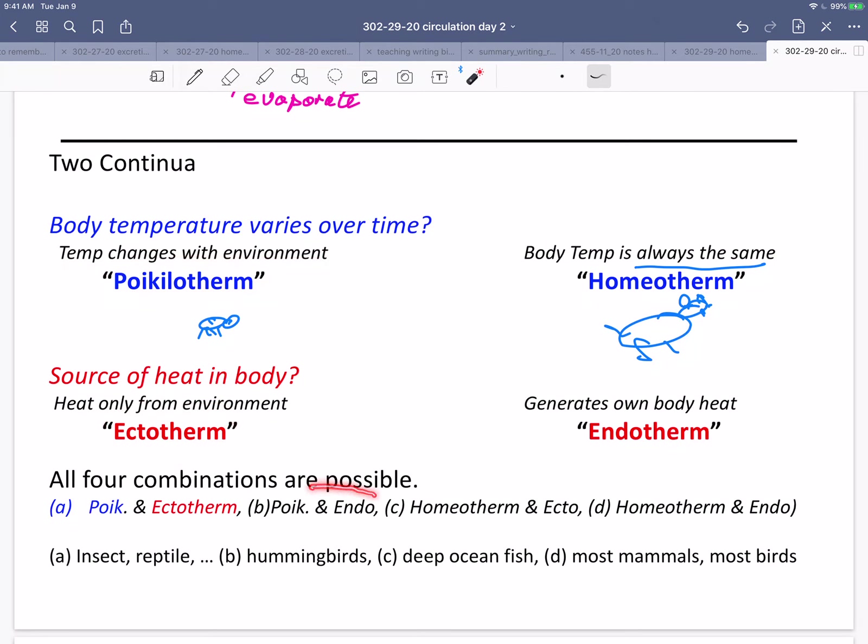They can be poikilotherms and endotherms. So the temperature changes with the environment, but they generate most of their own body heat. There aren't a lot of examples of these, but hummingbirds are one of them. Hummingbirds can't feed at night, and they don't get enough energy when they're not feeding to maintain a high body temperature. So hummingbirds typically let their body temperatures drop down quite a bit, often to near ambient, near the actual temperature in the air during the night, and then warm up again during the day. So they are poikilotherms. They do change their body temperature during at least some of the time, but they're also endotherms. Mostly they use their own body heat.